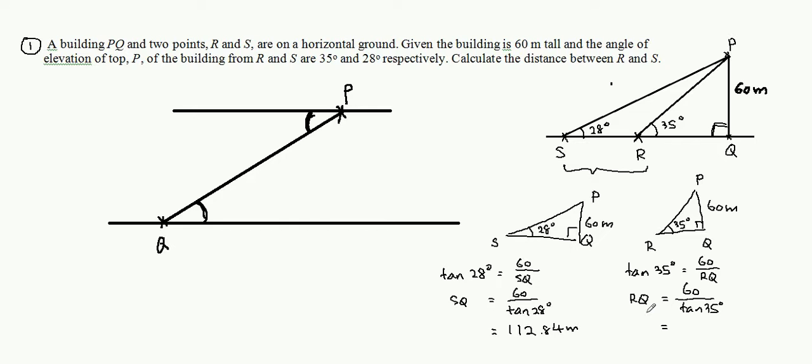So this one you just calculate by using your calculator. 35 degrees. So you will get 85.69 meter.